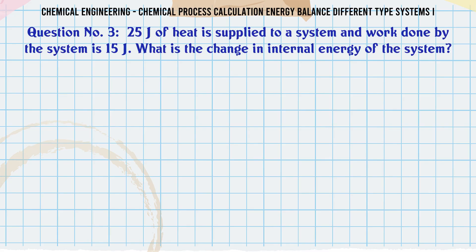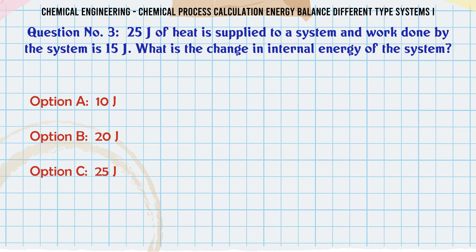25J of heat is supplied to a system and work done by the system is 15J. What is the change in internal energy of the system?